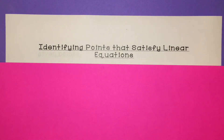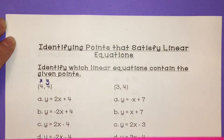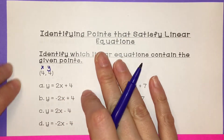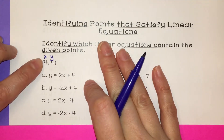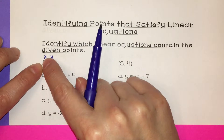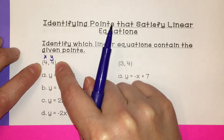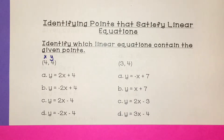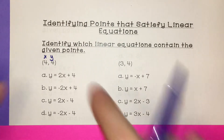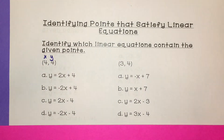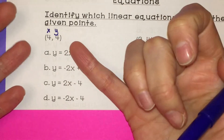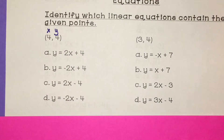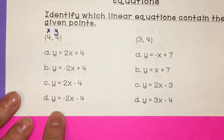We're going to identify points that satisfy linear equations. We're going to identify which linear equations contain the given points. That means you plug the x and y values into your equation and see if the two sides are equal. If the two sides are equal, the point satisfies the equation and will be on the line when we graph it. If the two sides are not equal, that point will not be on the line.